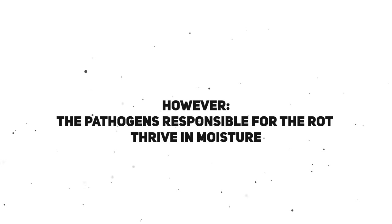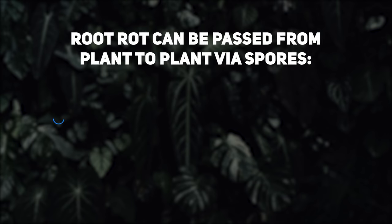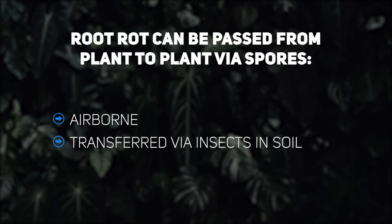Wet soil can suffocate the roots of a plant by dramatically lowering the oxygen level. Believe it or not, the roots of our plants, much like us, need oxygen in order to function. Now, root rot can be passed from plant to plant via spores. These spores can either be airborne or they can be transferred from various insects living in the substrate, including fungus gnats — as if we didn't hate them enough already.